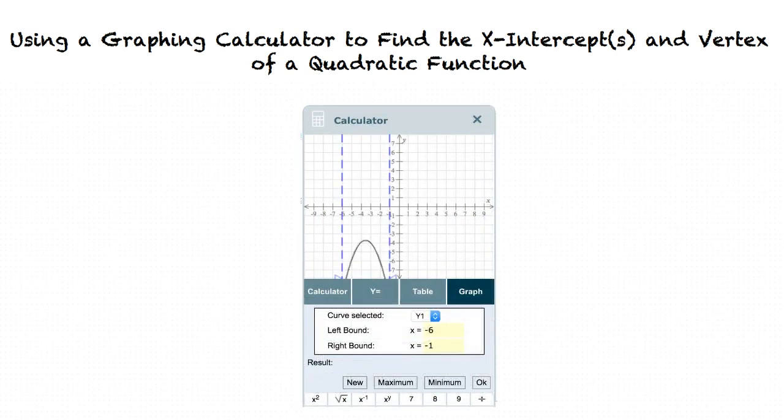It is important to set the bound so the proper vertex can be identified. In this case, we need to localize the vertex, which means we set the left bound to negative 6 and the right bound to negative 1. Notice how the graph's vertex is within the dotted lines. This will help us identify that vertex.